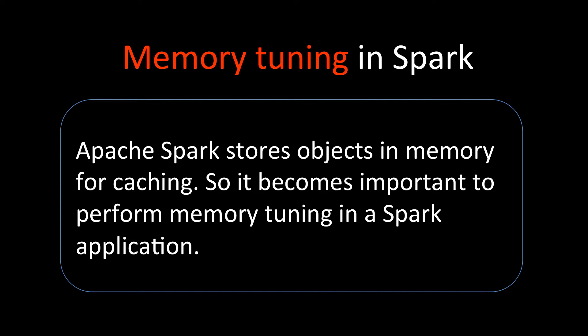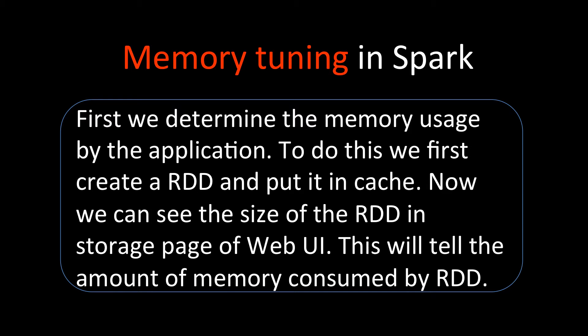Apache Spark stores many objects in memory for caching, so we have to do memory tuning to get higher performance from this caching system. First, we determine what memory usage our application is doing. We can create an RDD and put it in cache, and then we can see the size of the RDD in the storage page of the Spark Web UI, which is used for monitoring.